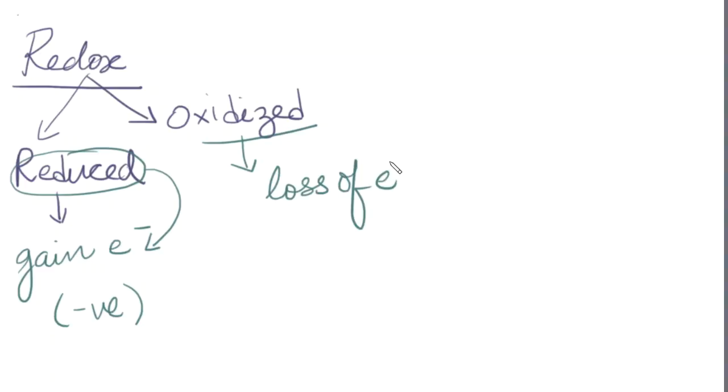A lot of people learn this through memorizing this: Loss of electrons is oxidation and gain of electrons is reduction. Leo the Lion goes GER.